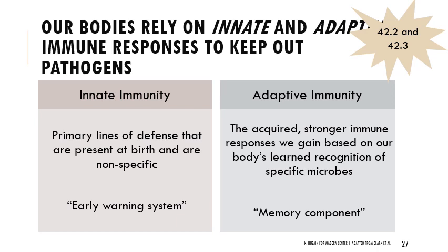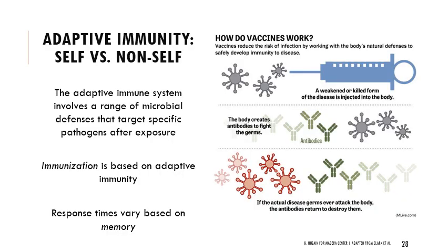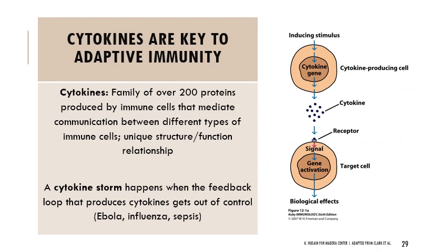Now we turn to adaptive immunity — the memory component. If something gets into our body and we're not able to stop it from spreading, our body learns from it, recognizes it, and can respond in the future. This is the premise of vaccines and immunization: we get exposed to a pathogen, adapt to it, and our body can respond very quickly and intensely to future exposures because of that memory.